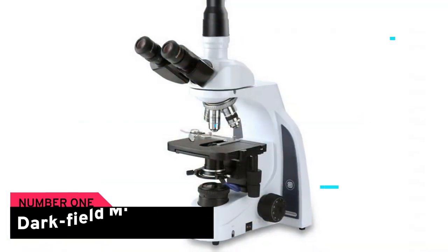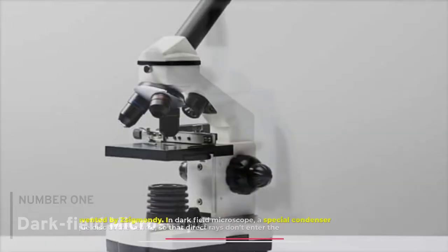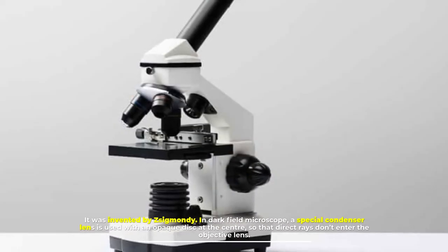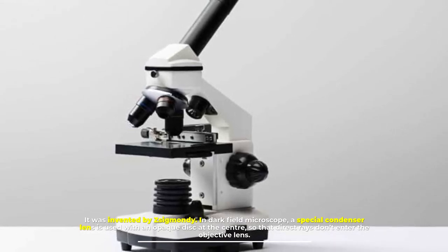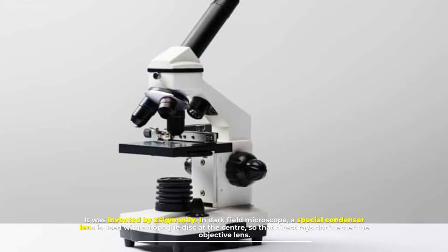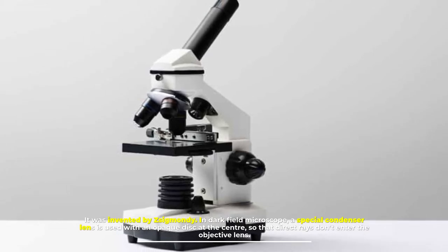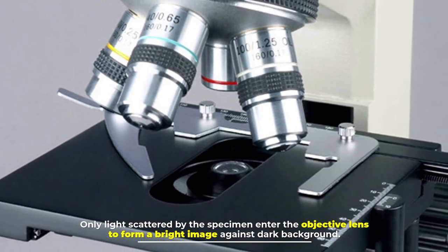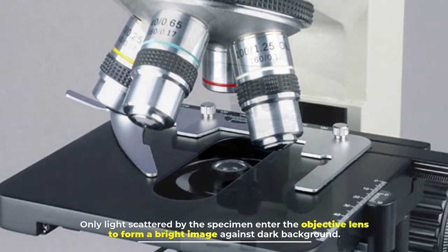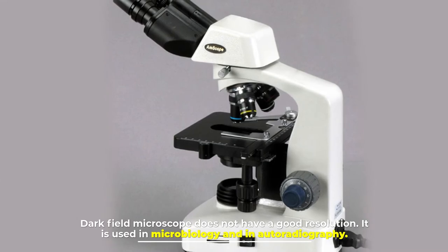Number one: dark field microscope. It was invented by Zsigmondy. In dark field microscope, a special condenser lens is used with an opaque disc at the center so that direct rays don't enter the objective lens. Only light scattered by the specimen enters the objective lens to form a bright image against dark background.